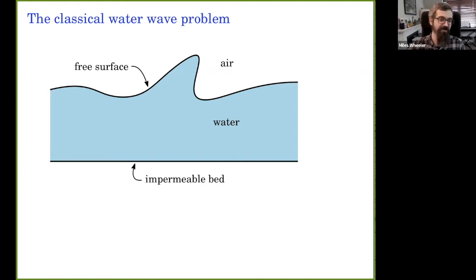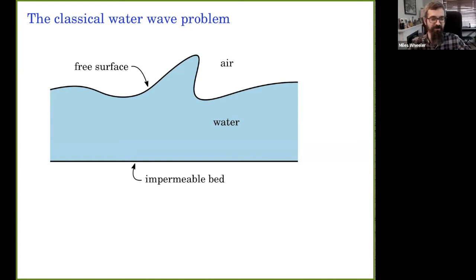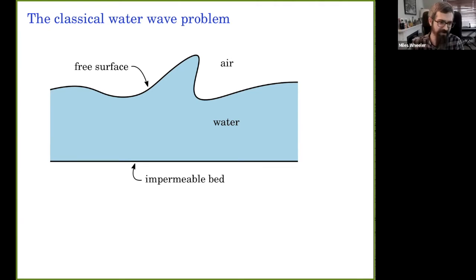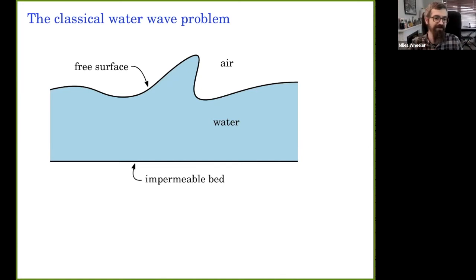We have a fluid region — water here in blue — with two different boundary components. There's a bottom boundary: a flat impermeable bed, like the bottom of the ocean or a river, where fluid particles just slide back and forth along it and it's fixed. Then we have a more interesting boundary component: the free surface, which models an interface between the water and some other fluid, say air.